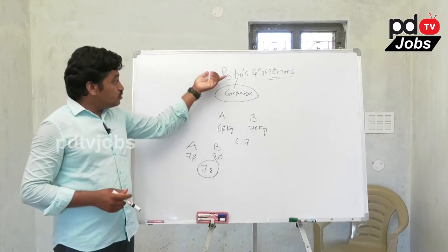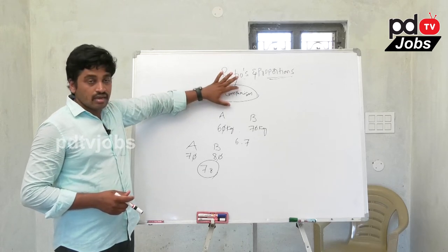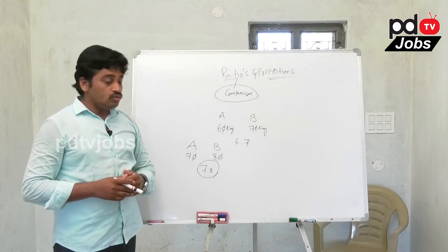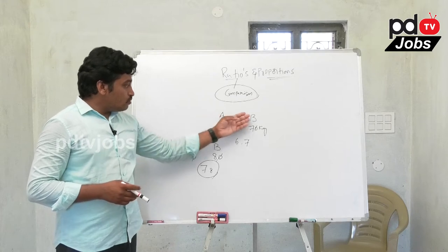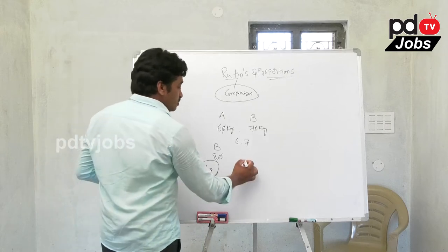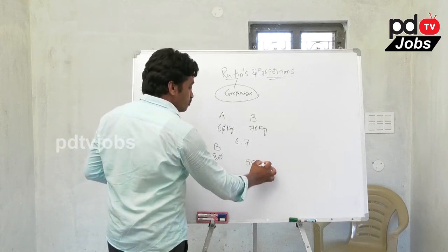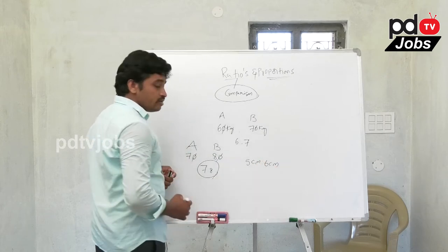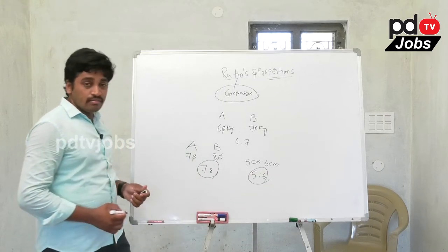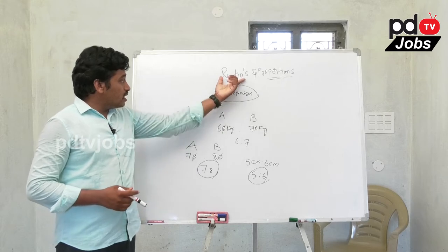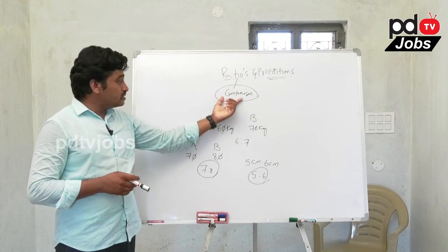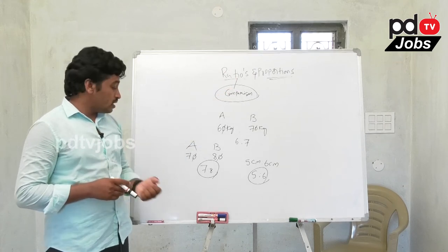Ratio is nothing but comparison — comparison between any two objects or any two quantities is called a ratio. For example, comparing weights or heights: if one person is 5 feet 5 cm height and another person is 6 cm height, then the heights ratio is five is to six. Ratio depends on comparison.